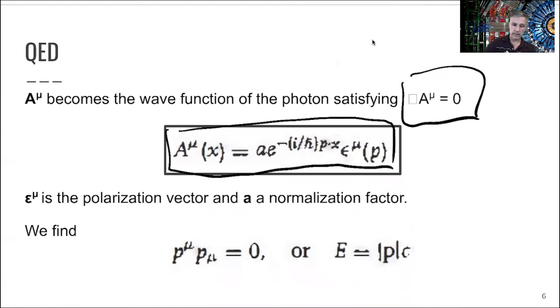So now this in the QED, this A nu becomes our wave function for the photon. Again, we have to, this is as a result of the gauge we made. So we made a specific choice in our reference frame. And then we can describe the photon with our wave function. There is this epsilon here. Epsilon is our polarization vector. And A is a normalization factor. We always have to normalize our wave function to specific sets of units.